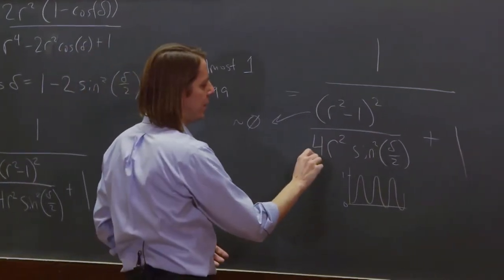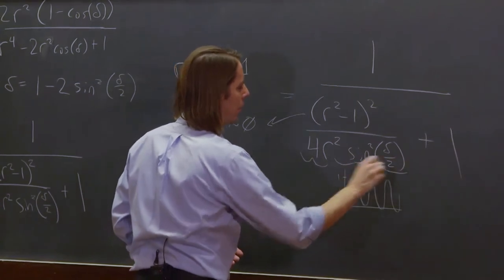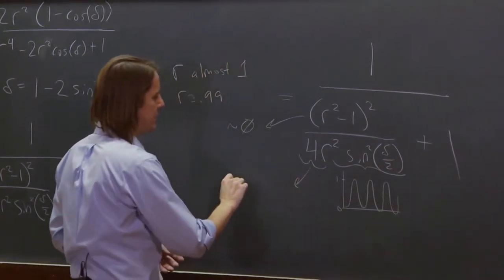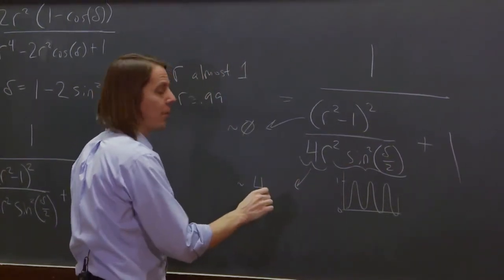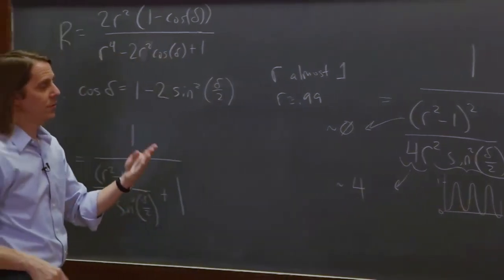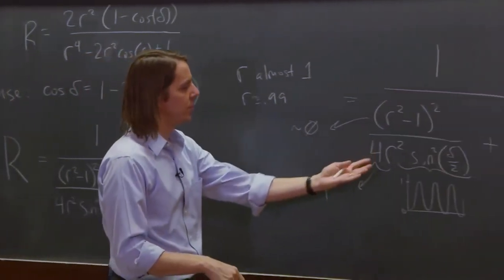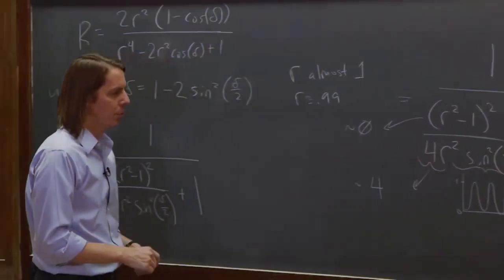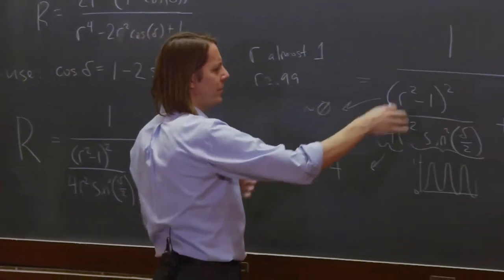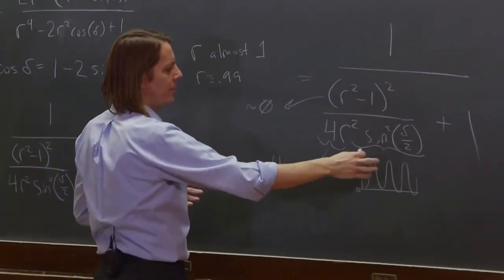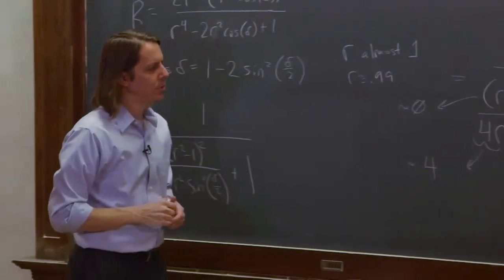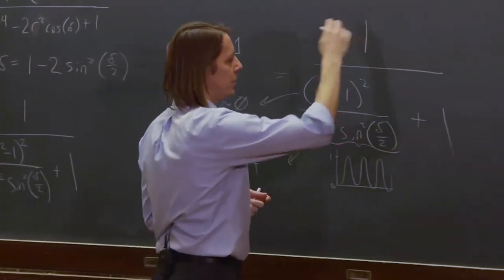And then what is this? So this is about 4, because R is very close to 1, R squared is very close to 1. So that is very close to 4. So we have something that looks like 0 over something that looks like 4 times this sine squared delta over 2 plus 1 and all over 1.